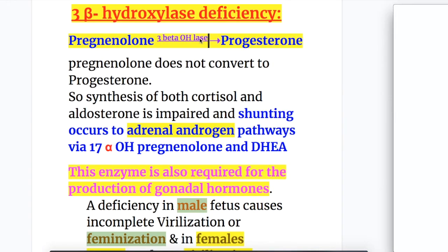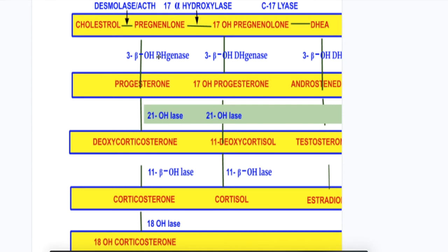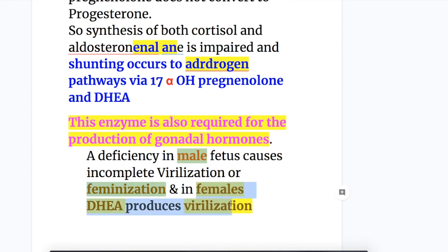In 3 beta hydroxysteroid dehydrogenase deficiency, pregnenolone is not converted to progesterone, so synthesis of both cortisol and aldosterone is impaired and shunting occurs to the adrenal androgen pathway via 17-alpha hydroxypregnenolone and DHEA. This enzyme is also required for gonadal hormone production, so a deficiency in a male fetus causes incomplete virilization or feminization, while in females it causes increased DHEA production leading to virilization.